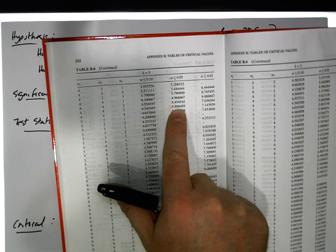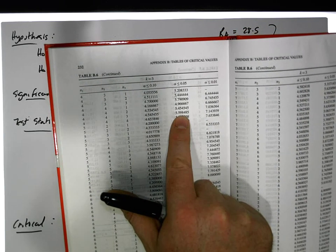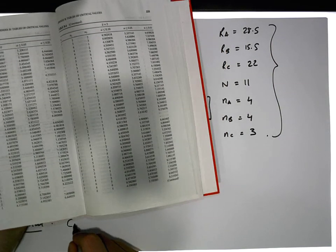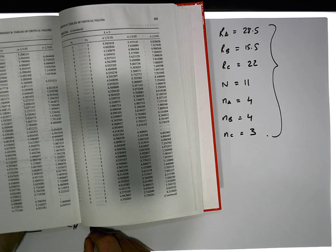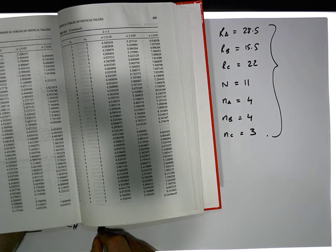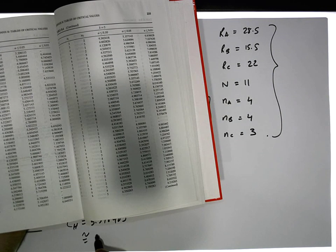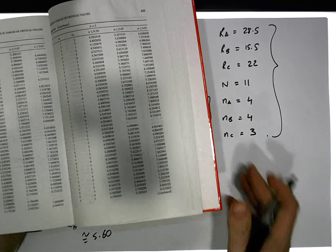So the critical value is 5.598485. So the critical value for H is equal to 5.598485, which is approximately equal to 5.60, written to two decimal places.